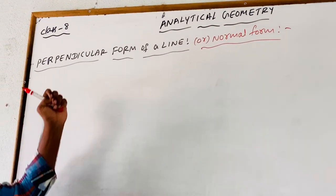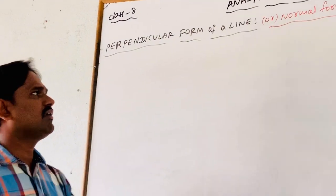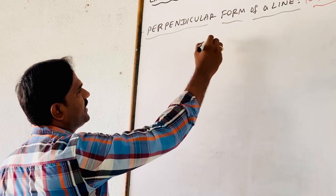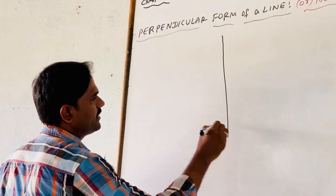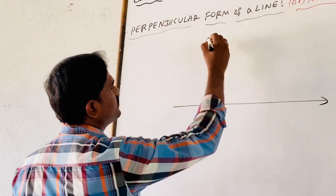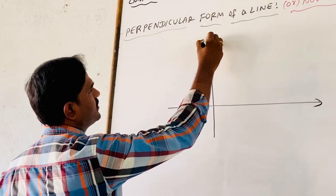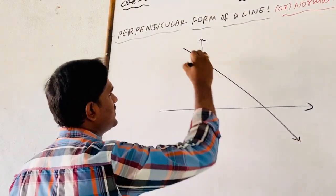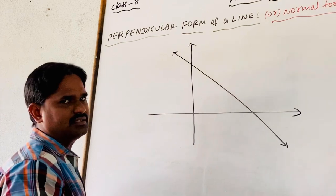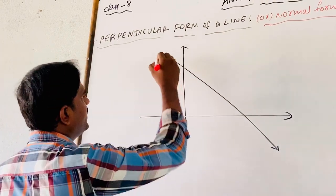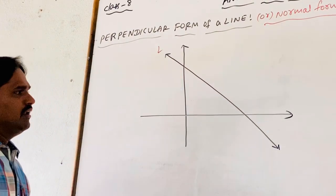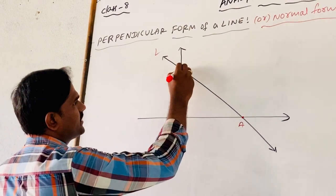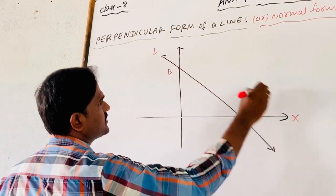Now we are finding the perpendicular form of a line, also called the normal form. For example, I am taking a line L which intersects the X and Y axes at two distinct points. It intersects the X axis at A and the Y axis at B.